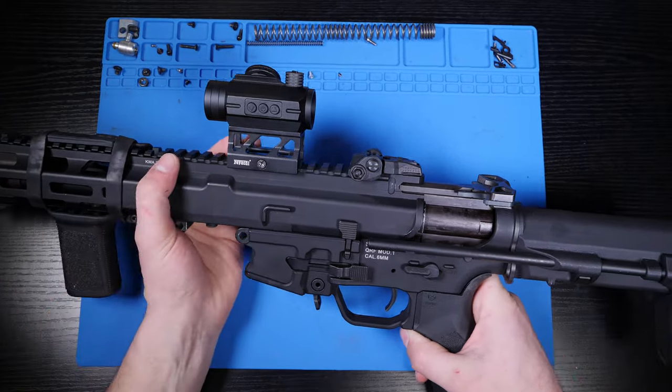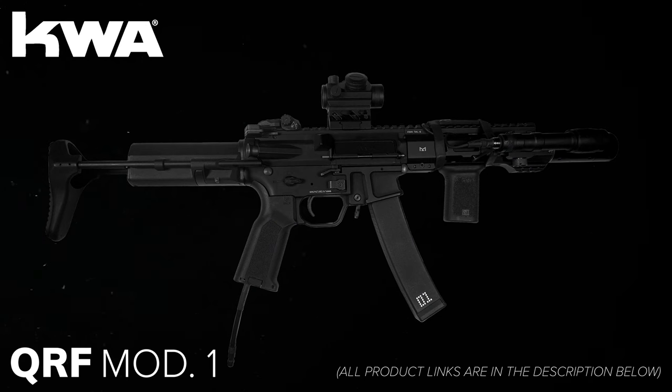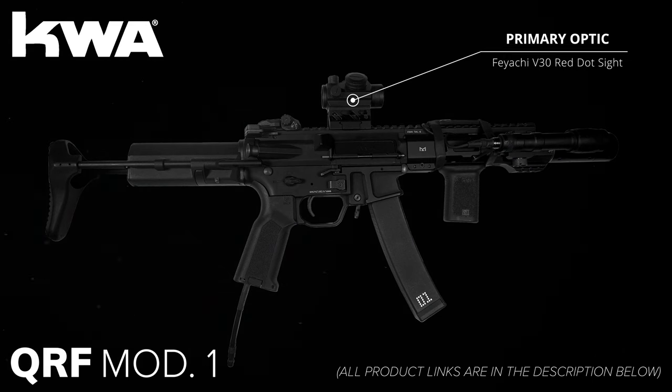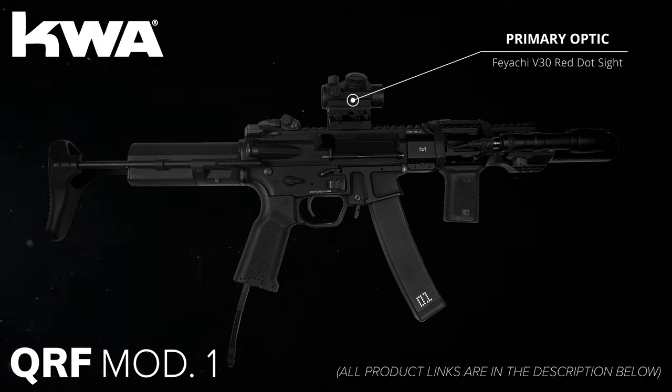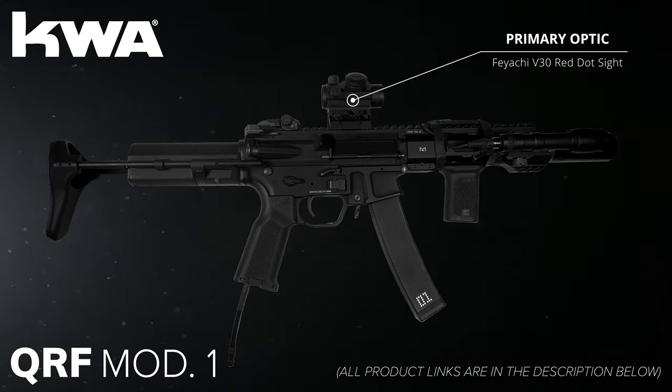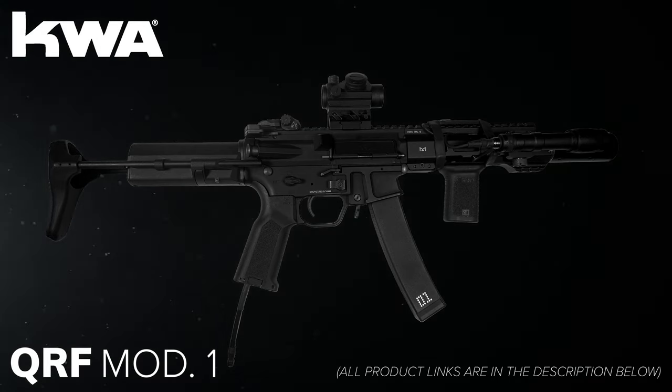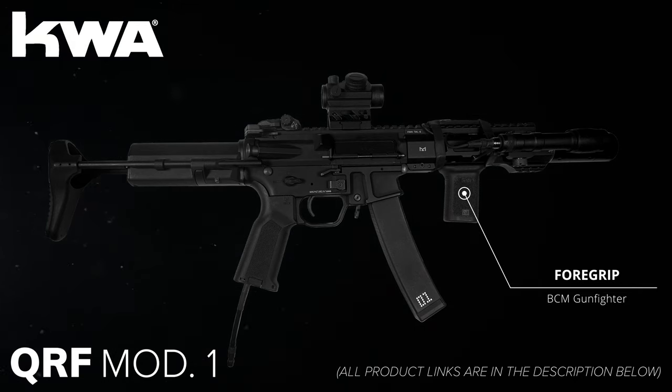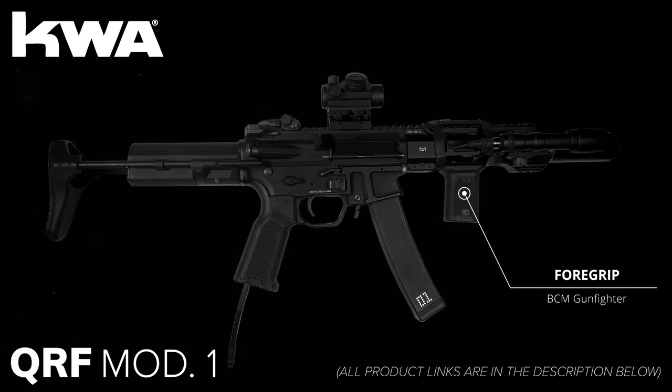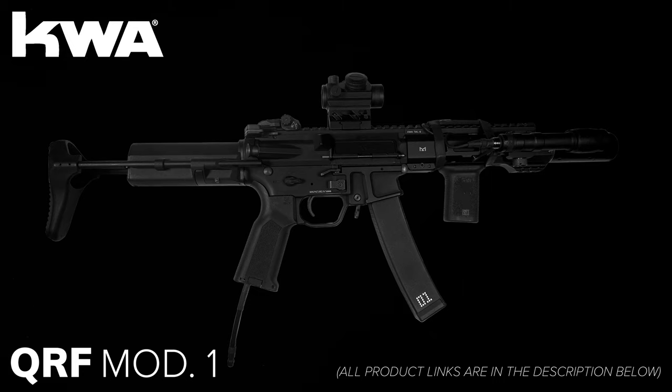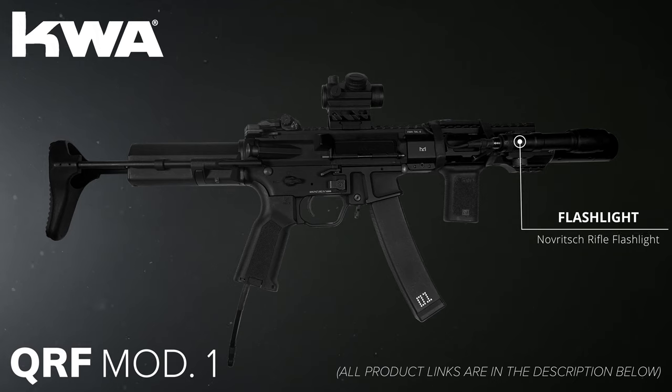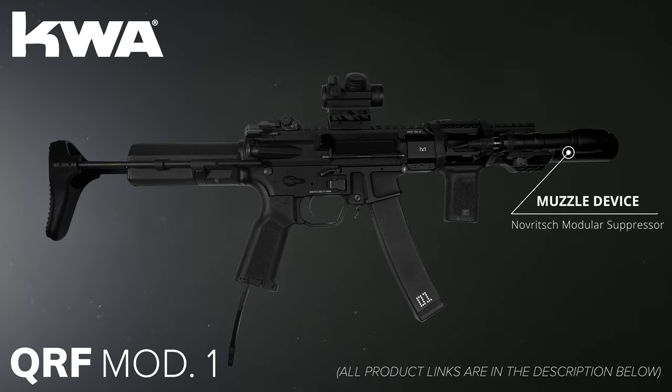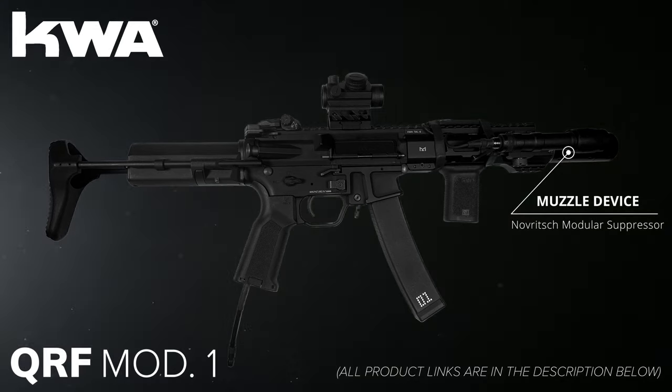For my optic, I'm using the Feyachi V30, a red dot that I am a big fan of. I did produce a full review video on this optic, so check it out in the link below to see all the features that made it the right choice for this build. For my vertical grip, I'm once again using the BCM gunfighter. You'll find this grip riddled all over my channel's content. It's simply one of my favorites. For my light source, I'm using the Novritsch rifle light, and then to cover up my extended barrel and reduce the overall sound profile of the rifle, I have a Novritsch modular suppressor as my muzzle device.